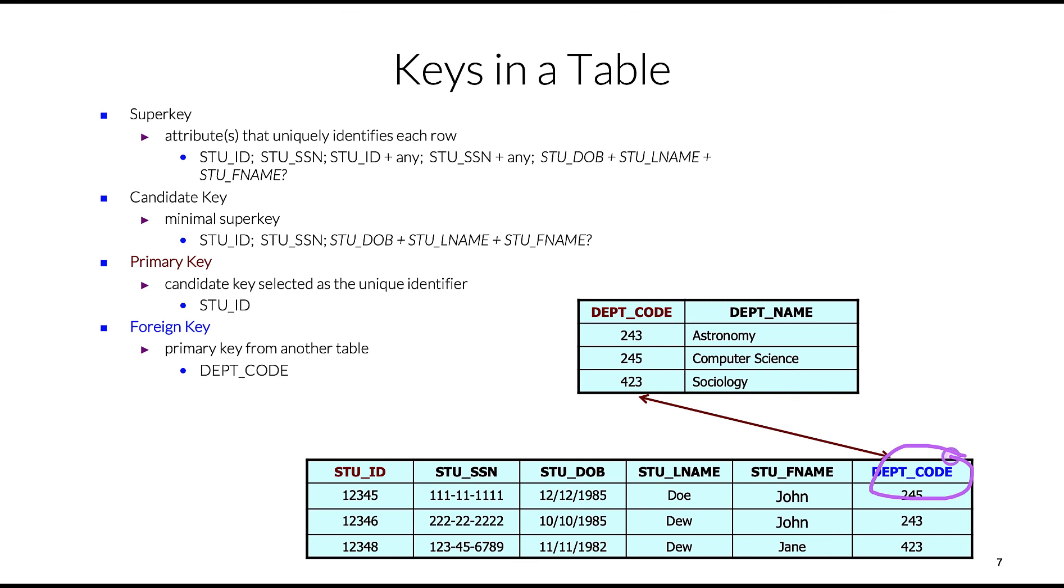These two tables can be joined via this foreign key. And of course, we can have secondary keys - attributes that we'll use for data retrieval or querying. For example, student last name and student date of birth can help us in querying.